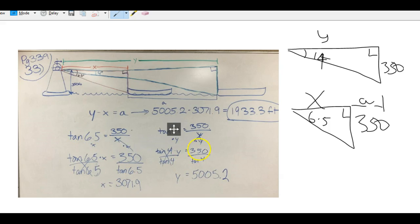We multiply both sides by x and divide both sides by tan 6.5. The same thing with this, tan 14 is 350 over y. Just like the same thing, we do y is going to be 350 divided by tan 14.